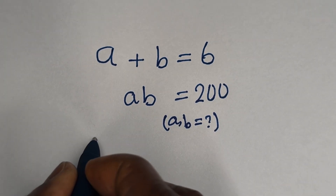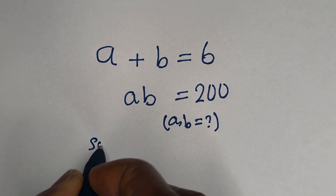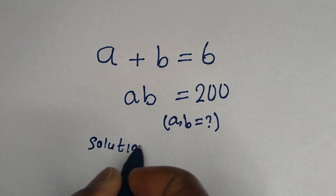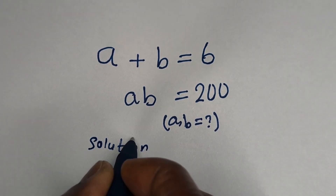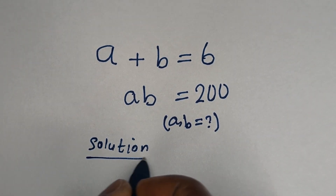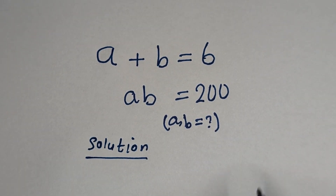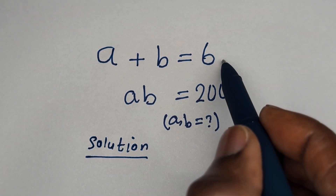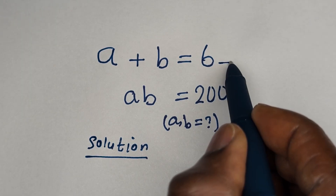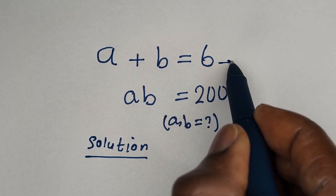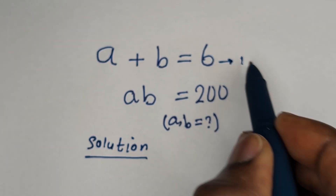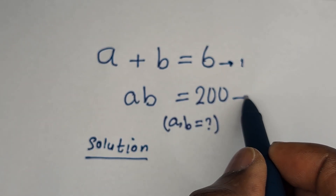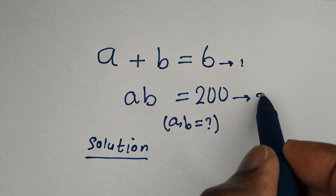Solution. A plus B is equal to 6 — let us call this equation 1. Then AB is equal to 200 — let us call this equation 2.